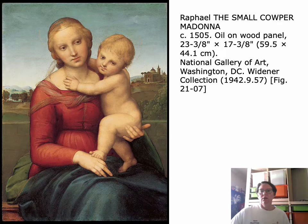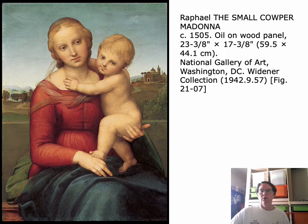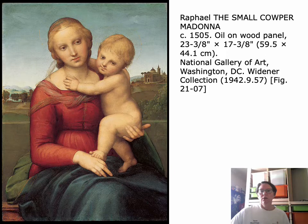This is Raphael's Small Cowper Madonna. Raphael was a student of Perugino's, whom he met in his home of Urbino. Raphael eventually moved to Florence, where he saw the work of Michelangelo and Donatello, and was exposed to the pyramidal composition that tends to be so popular in the High Renaissance. This work is a good example of what disegno style looks like in the High Renaissance.